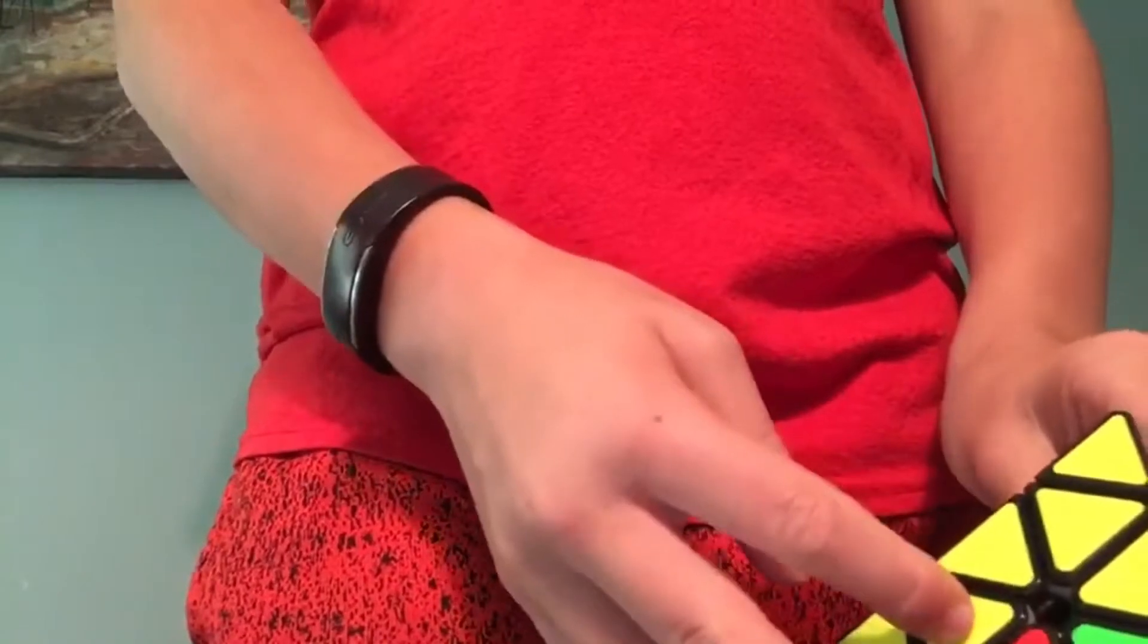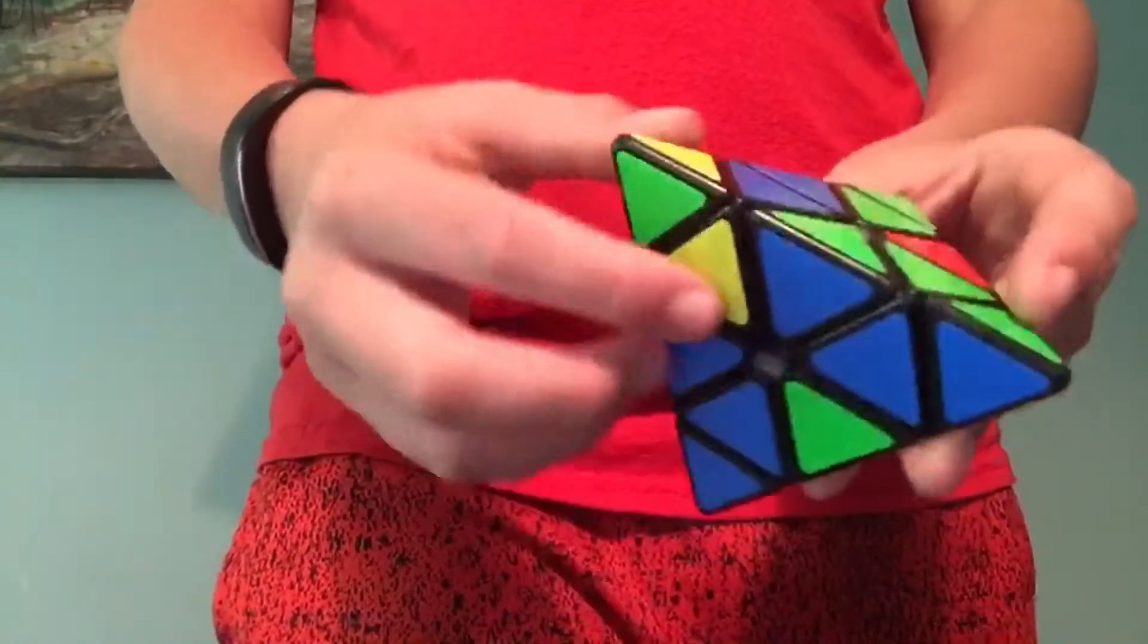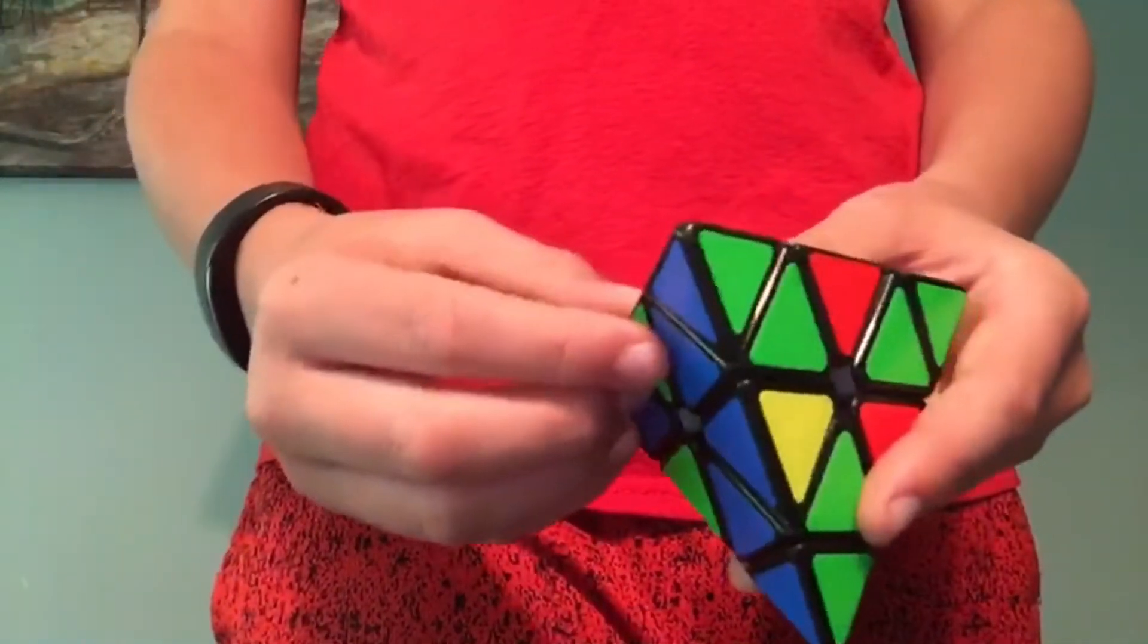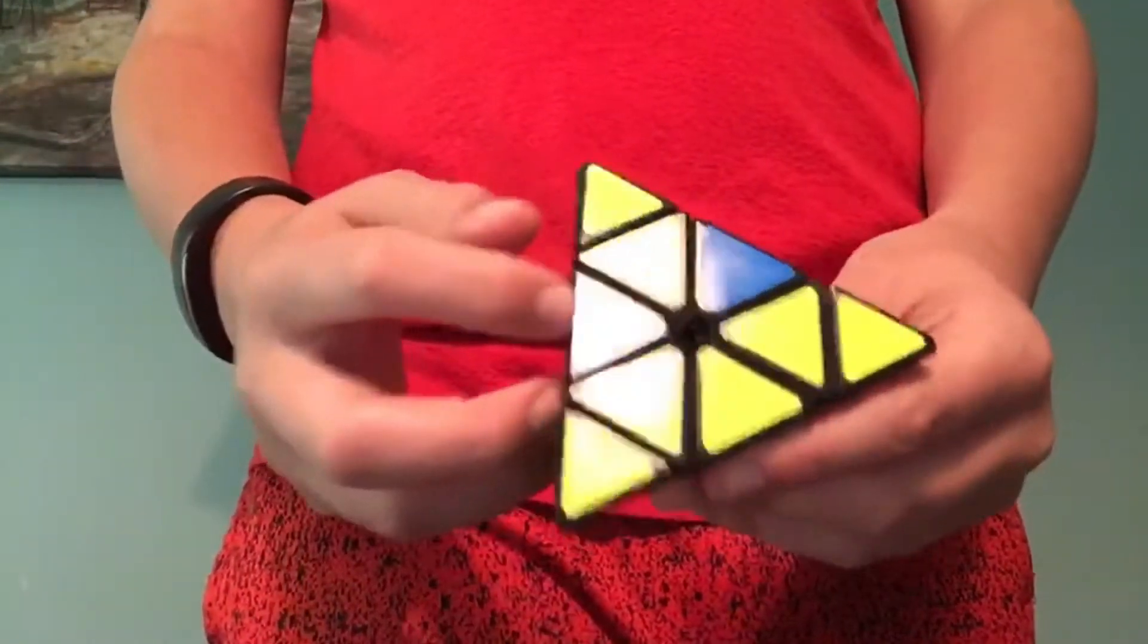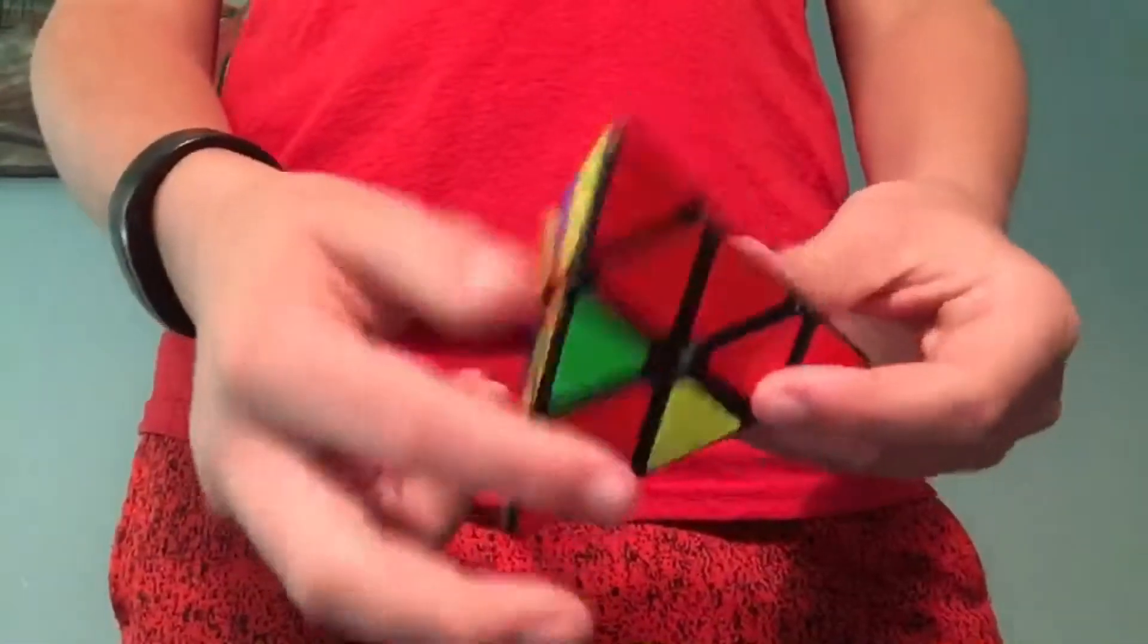But this side is yellow, yellow, yellow, and green. So you'll need to find another yellow. And now you're set.